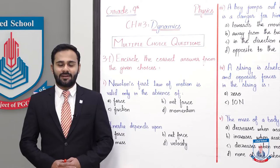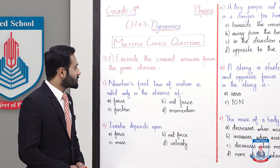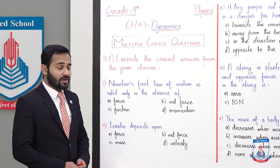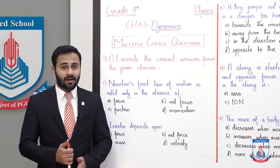Chapter number 3 dynamics and the exercise multiple choice question. So 3.1 encircle the correct answer from the given choices. You have 4 options of each MCQ and you have to choose the correct one.